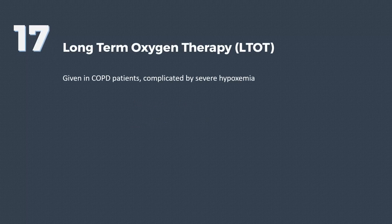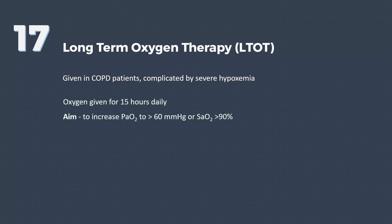Long-term domiciliary oxygen therapy shall be considered in COPD complicated by severe hypoxemia. Oxygen, if given for 15 hours daily with the aim to increase partial pressure of oxygen to above 60 mmHg or oxygen saturation to at least 90%, improves symptoms and survival.